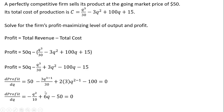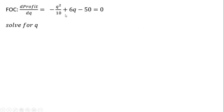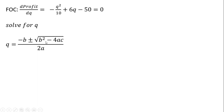Because we're interested in maximizing, we set this result equal to 0. Simplifying, this 50 minus 100 gives us minus 50. This is, by the way, the first order condition — for a maximum or minimum, we set the derivative equal to 0. So we now solve for Q, and we do have a quadratic equation here.